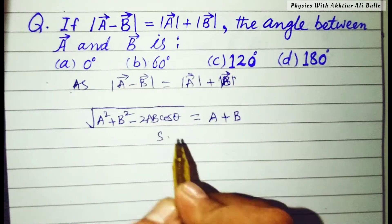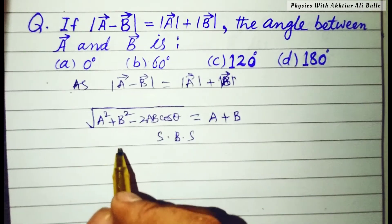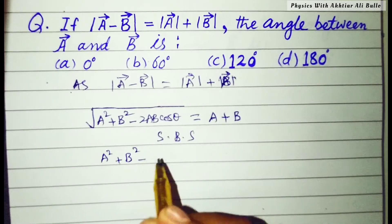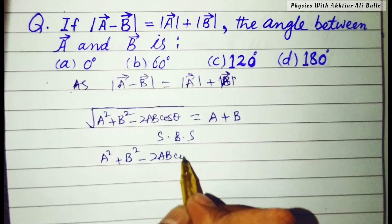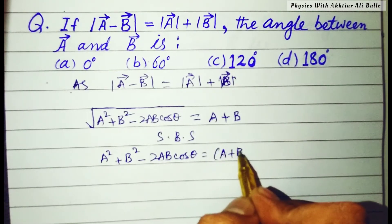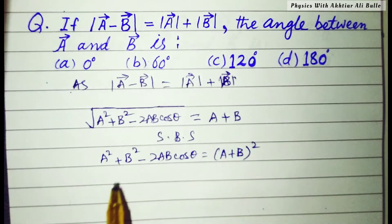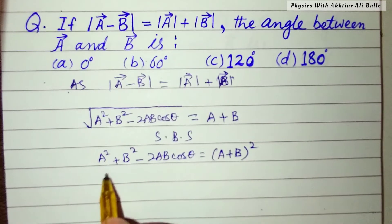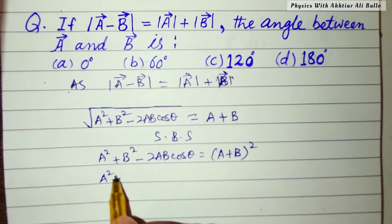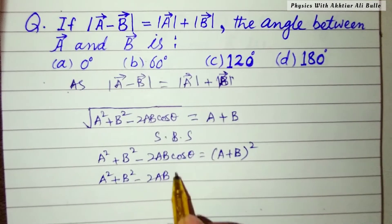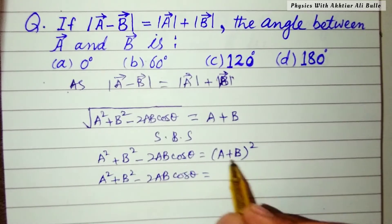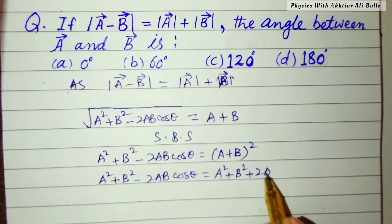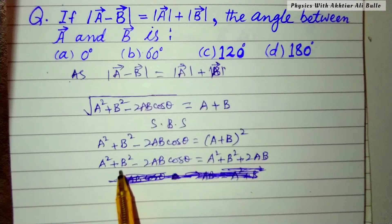Squaring on both sides: a² + b² - 2ab cosθ = (a + b)². This is the (a + b)² formula, so we can expand the right side as a² + b² + 2ab.